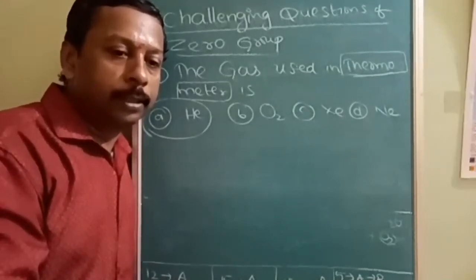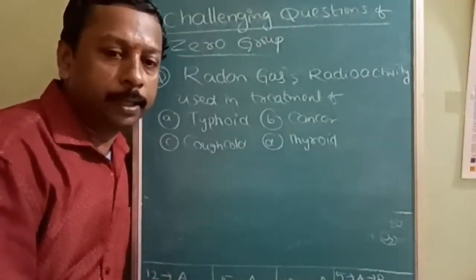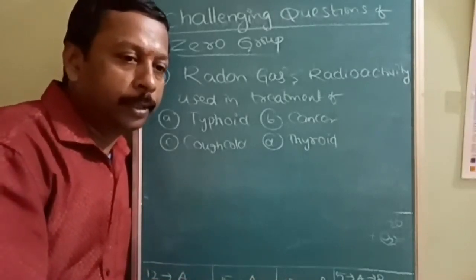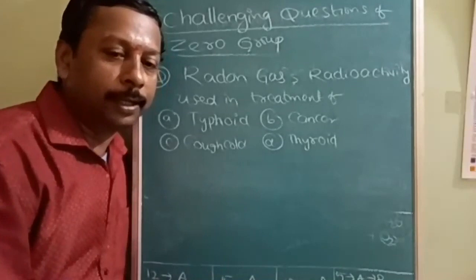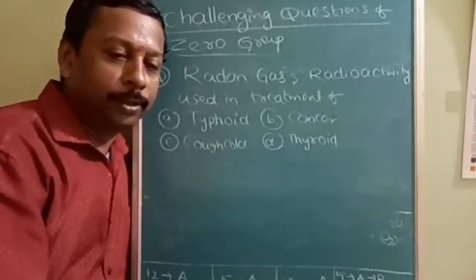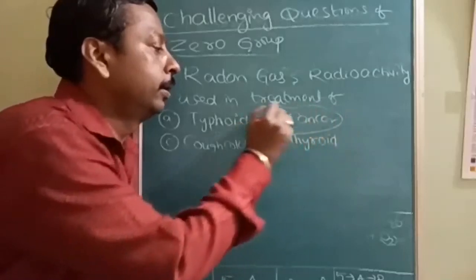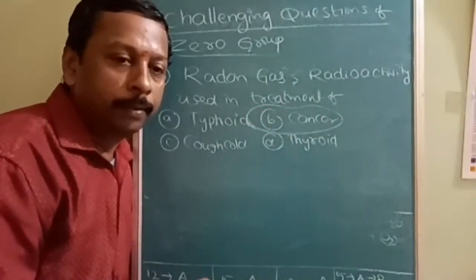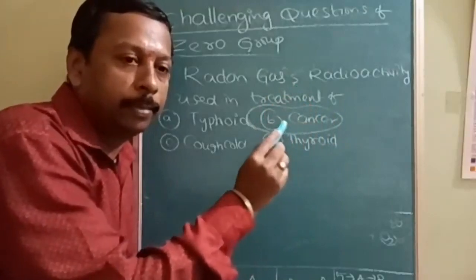Next question is: radon is a radioactive substance, the radioactivity emitted will be used in treatment of - typhoid, cancer, cough and cold, or thyroid. So options are very easy, at least you can do the guesswork. So answer is very simple, answer is cancer. Radiotherapy, that therapy is called radiation therapy or radiotherapy. When these radioactive radiations are projected towards the cancerous cells they will be burnt and growth will be stopped.